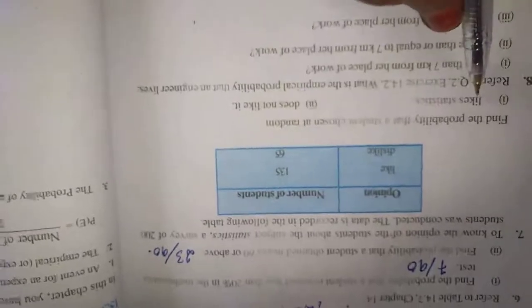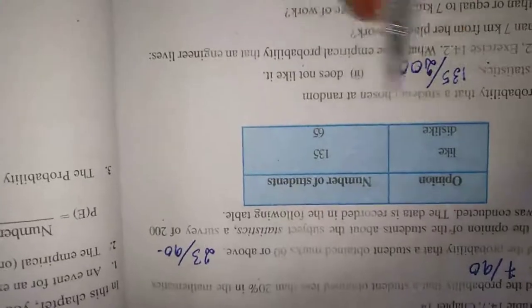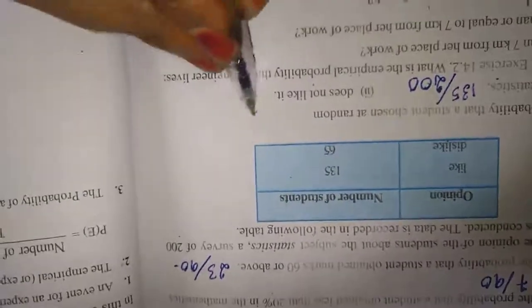To know the opinion of the students about the subject statistics, a survey of 200 students was conducted. The data is recorded in the following table. Students' opinions which were surveyed: like and dislike. Number of students who like is 135, dislike is 65. Find the probability that a student is chosen at random. First one is like statistics. Like means 135 divided by total, they told 200. Dislike, does not like it, that is dislike is 65. So 65 by 200.